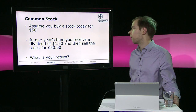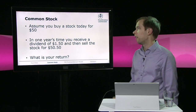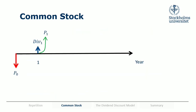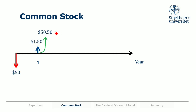Let's introduce some terminology with an example. Assume you buy a stock today for $50. In one year's time you receive a dividend of $1.50 and then sell the stock for $50.50. P0 is the price at time zero — the price today — so P0 was $50. P1 is the price next year, so P1 was $50.50. DIV1 stands for dividend in year one, which was $1.50.